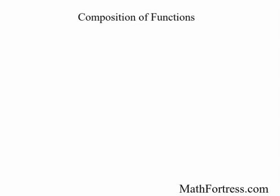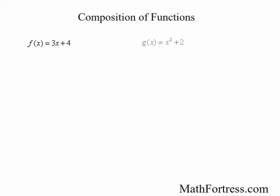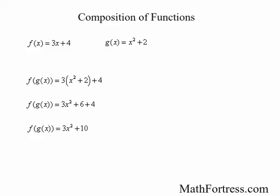Composition of functions. From your studies of algebra, you were introduced to functions using variables x and y. Then you were introduced to function notation, and this same function can be written as f of x equals 3x plus 4. You learned how to evaluate functions at specific values, say at x equals 3: f of 3 equals 3 times 3 plus 4, so f of 3 is equal to 13. You also learned that you can evaluate other functions. If g of x equals x squared plus 2, then f of g of x equals 3 times the quantity x squared plus 2 plus 4, which equals 3x squared plus 10. This expression is a composite function because it is composed of two given functions, f of x and g of x. This process is called composition.